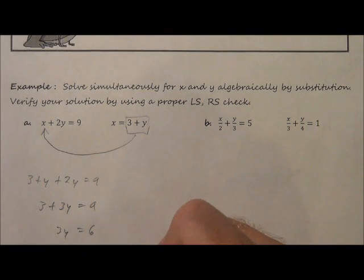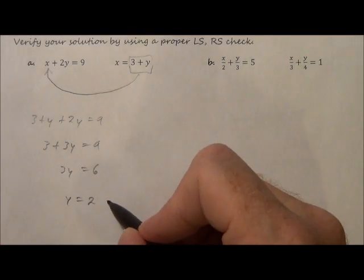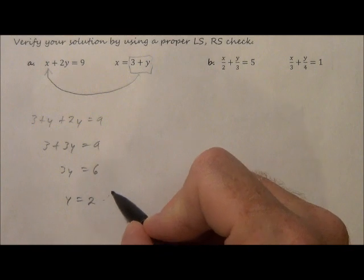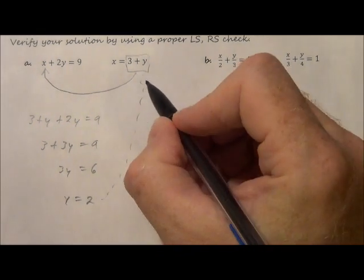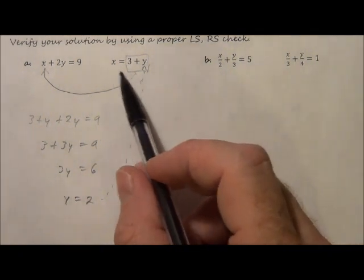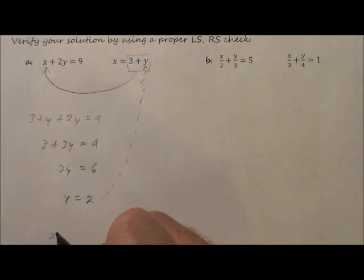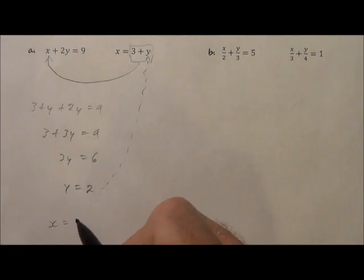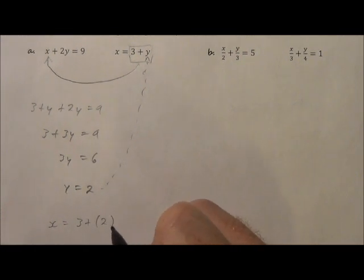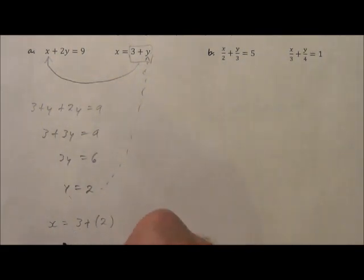Then we divide both sides by 3, so we get y equals 2. Now what we do is we're going to substitute this y equals 2 in for y in the second equation, which is already set up as x equals. Therefore, x equals 3 plus 2, which is what y equals from this first step. And then we're just a little bit of simple addition, x equals 5.